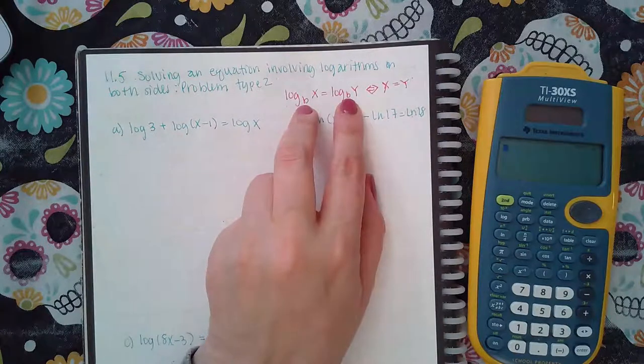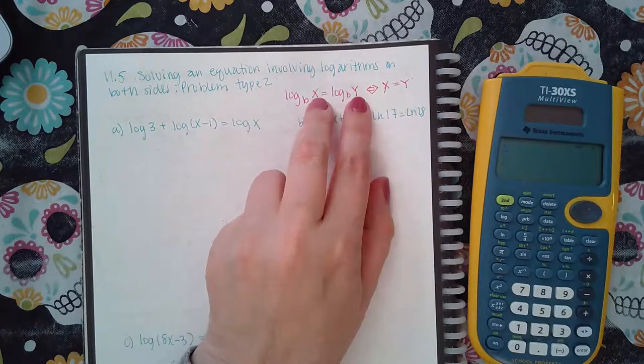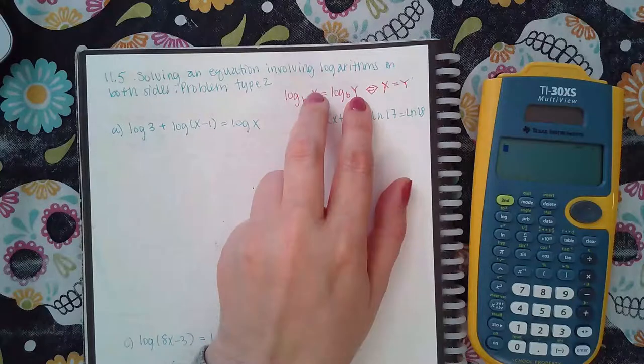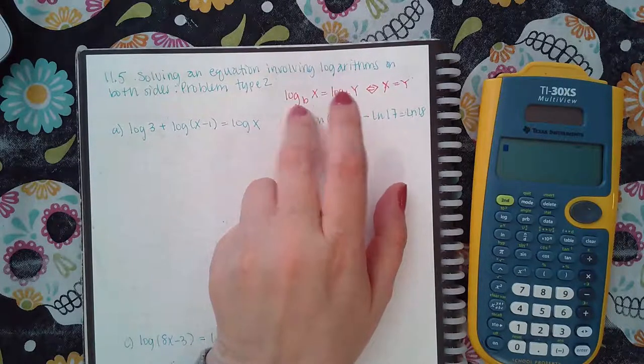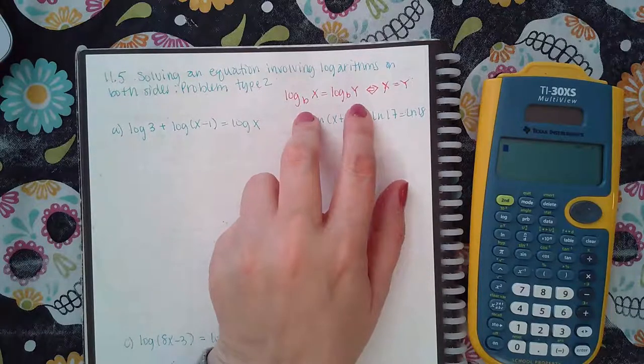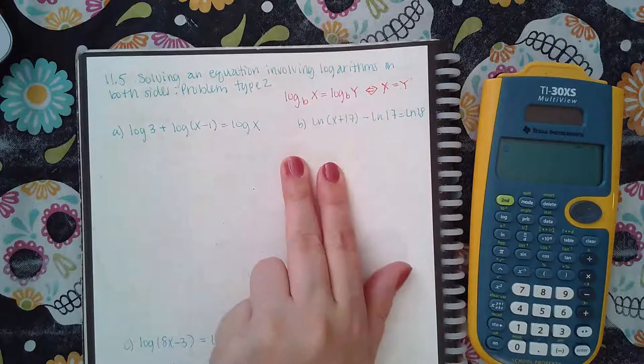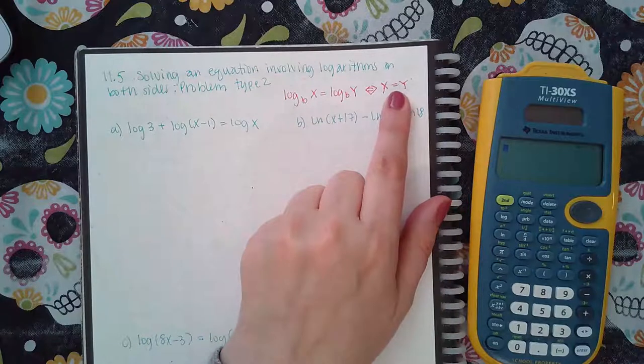So the only way these things could be equivalent statements is if this argument is the exact same as that argument. Basically, if you have a log and a base equal to log on the same base, you can just drop the logs and just worry about equating the arguments.